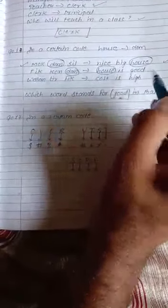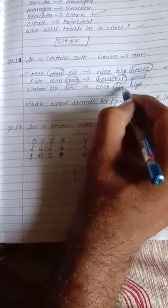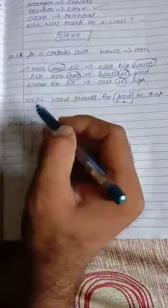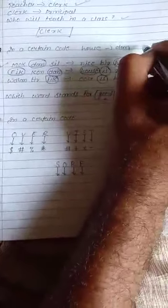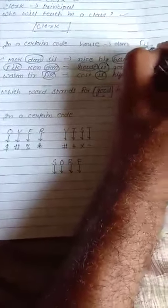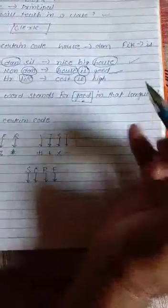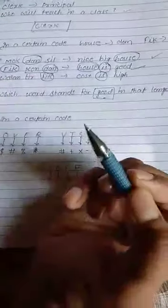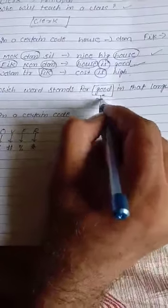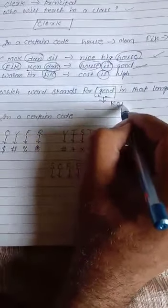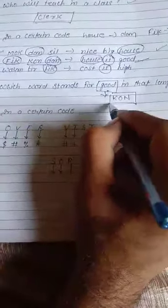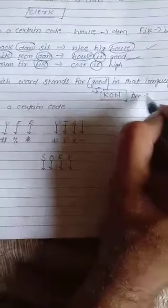So now again, in the second and third row, we can see is is common. Again, is is common. In the second and third, what is common? FIK, that is common. FIK. So we can say that FIK is a stand for is. Now what is remaining? Here it is remaining good. Here it is remaining KON. So for the good, what will be a stand? It will be KON. Then this will be our answer.